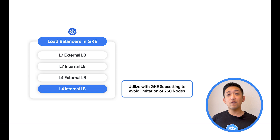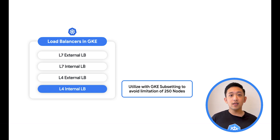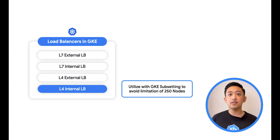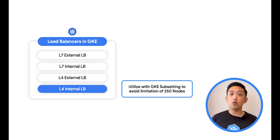Finally, for Layer 4 internal load balancers, there is a 250-node limitation, which can be circumvented when enabling GKE subsetting in your cluster. This is a feature in GKE that automatically partitions the backends of your cluster into groups that allow you to scale the cluster beyond 250 nodes with Layer 4 internal load balancers.